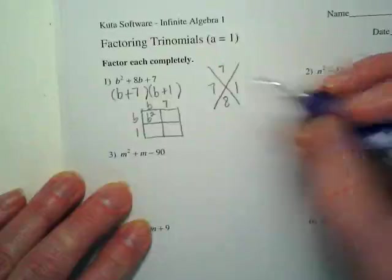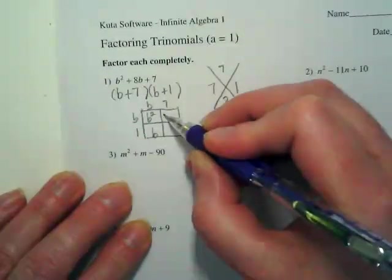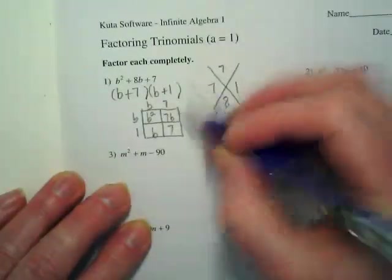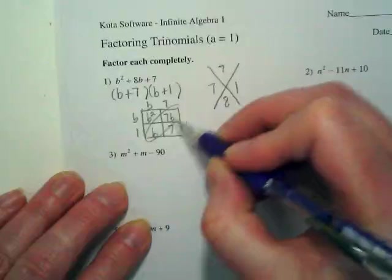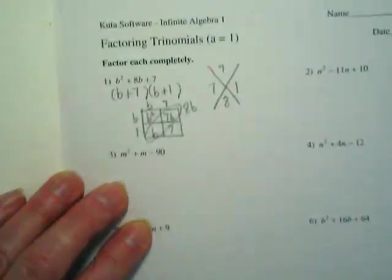And B times one is going to just be? Seven times B is 7B and seven times one is seven. Circle the like terms and show what they would combine to be.